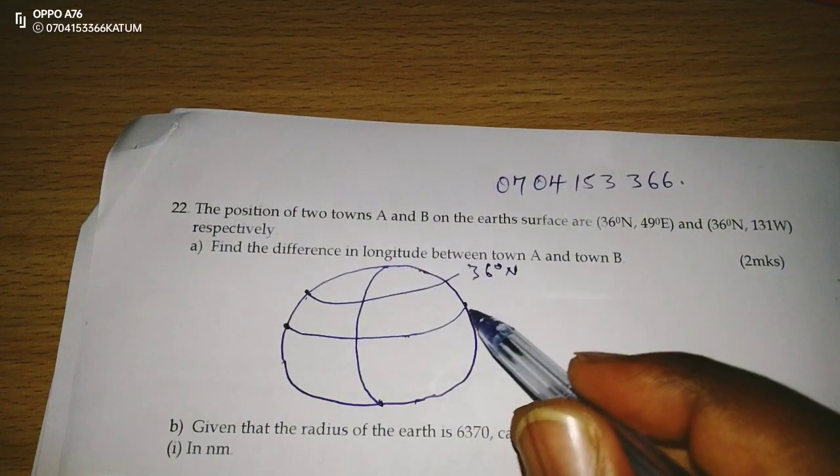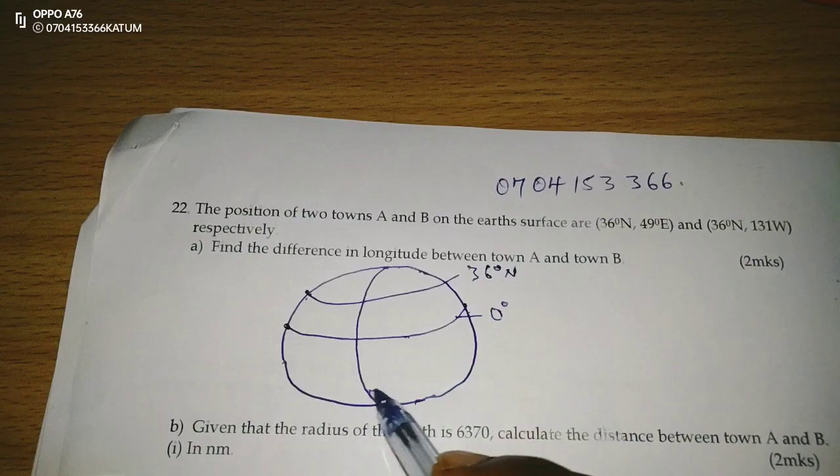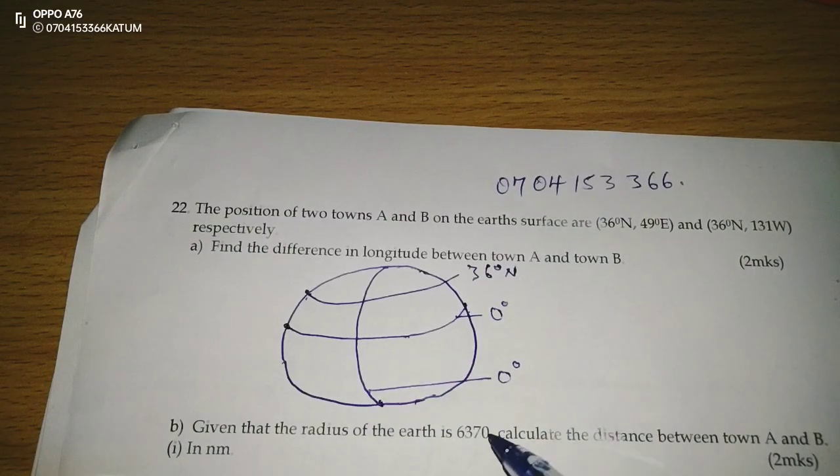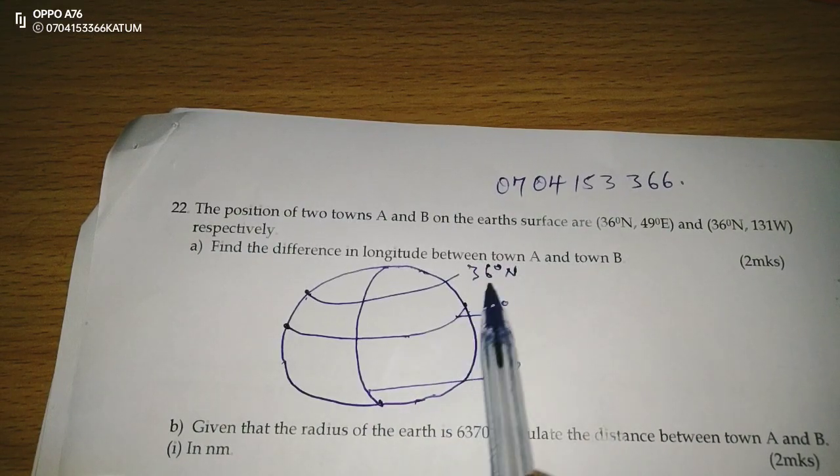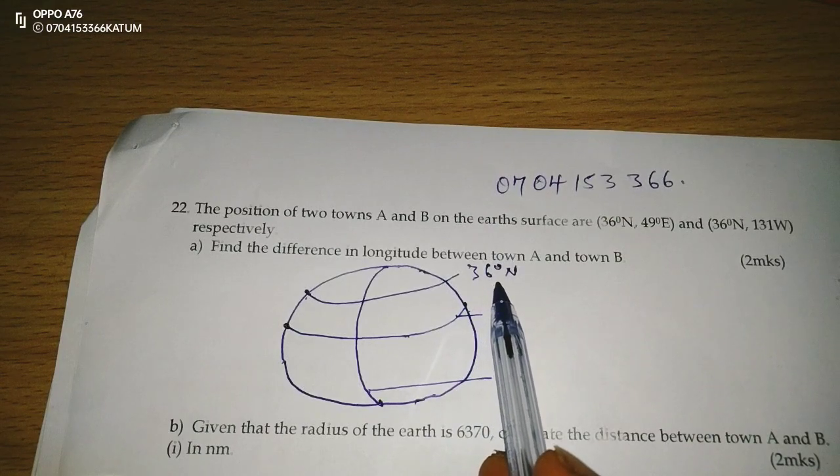Remember this is 0 degrees equator, this is 0 degrees prime meridian. So with 36 degrees in the northern part,